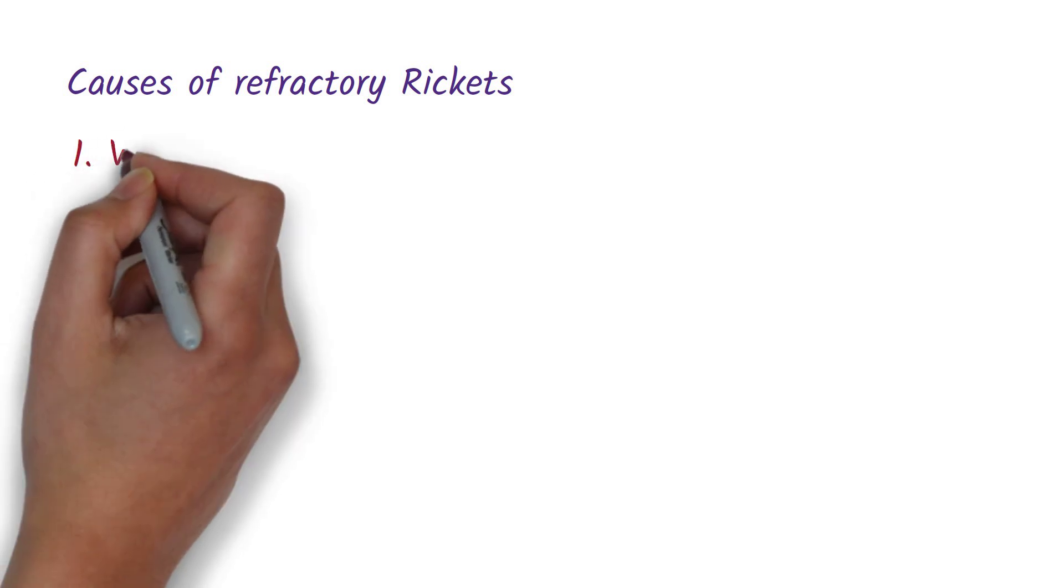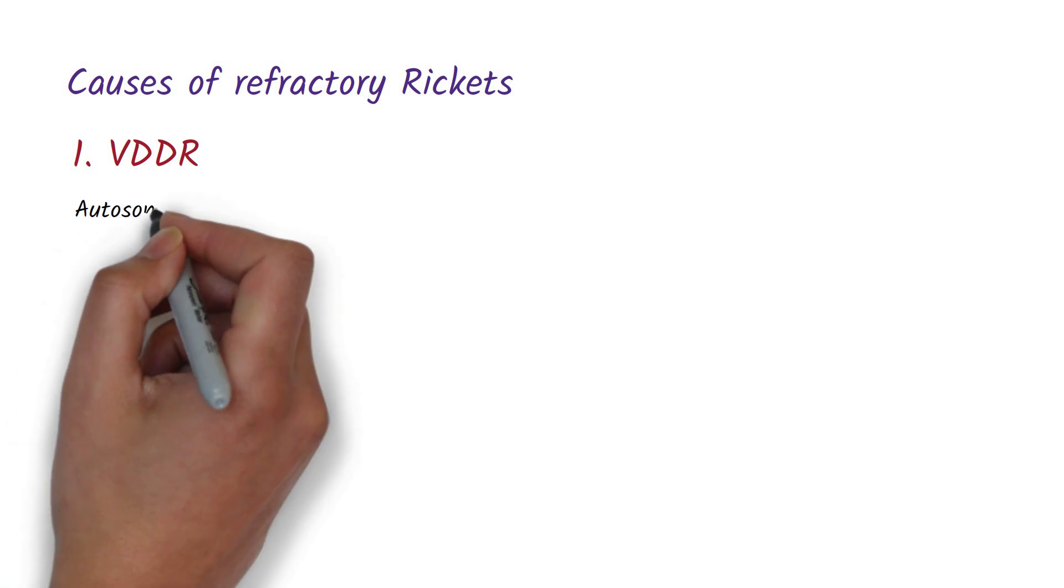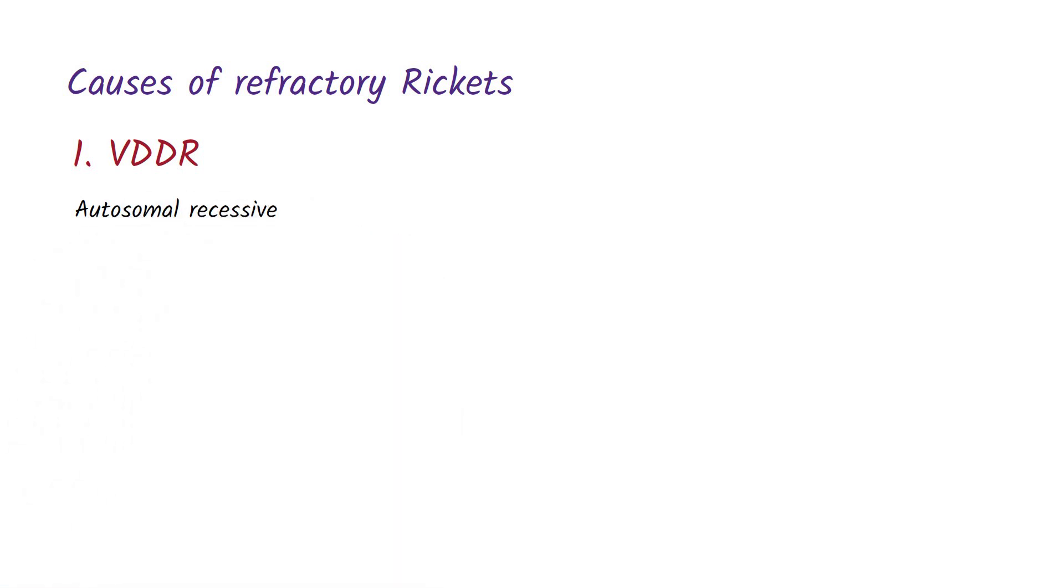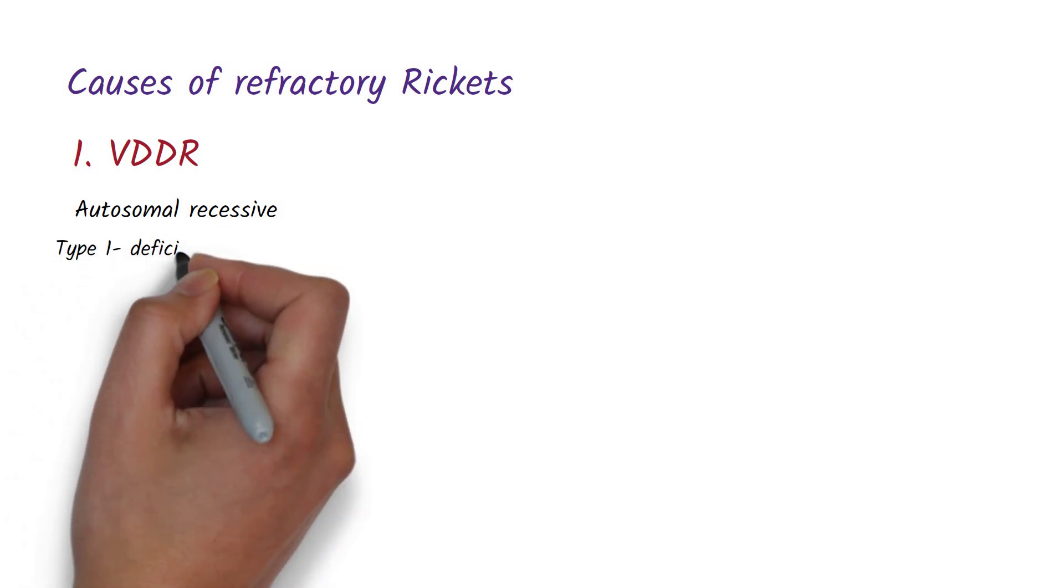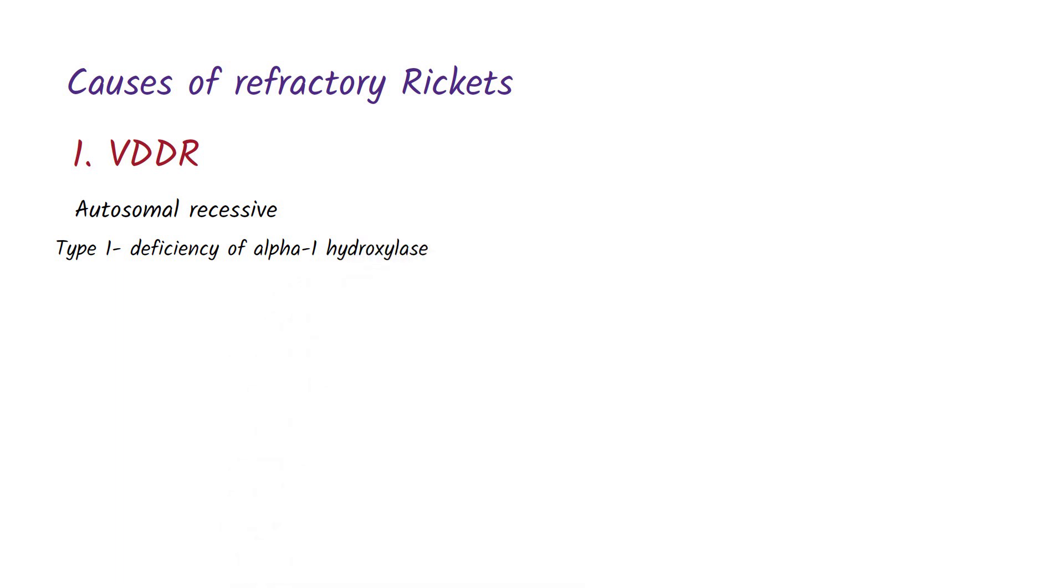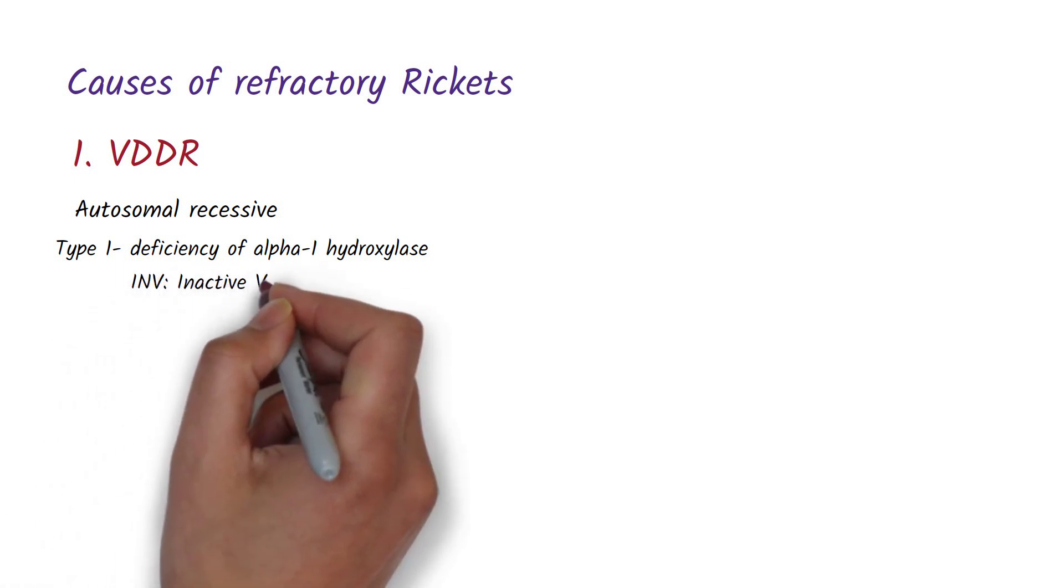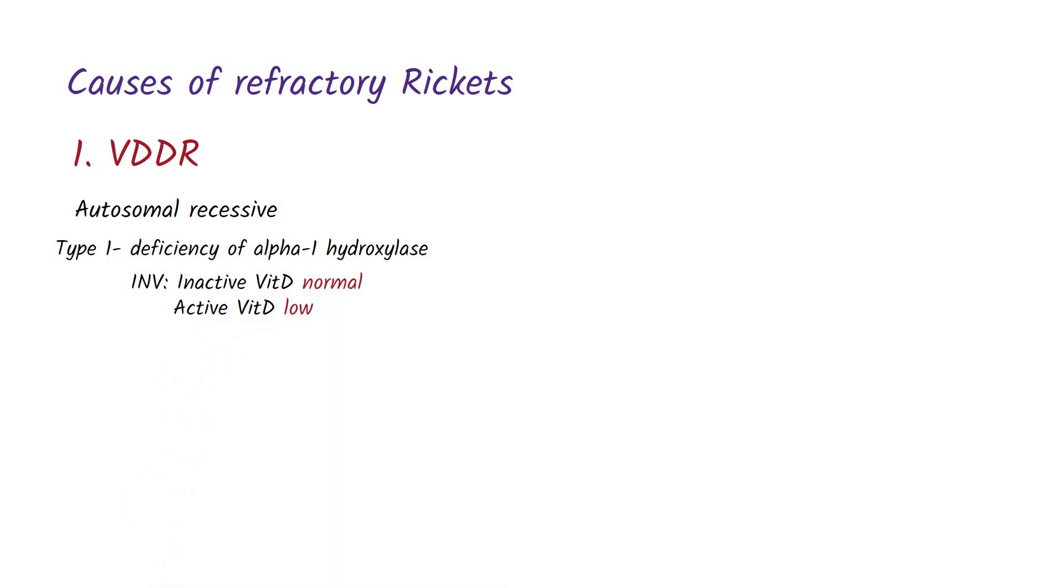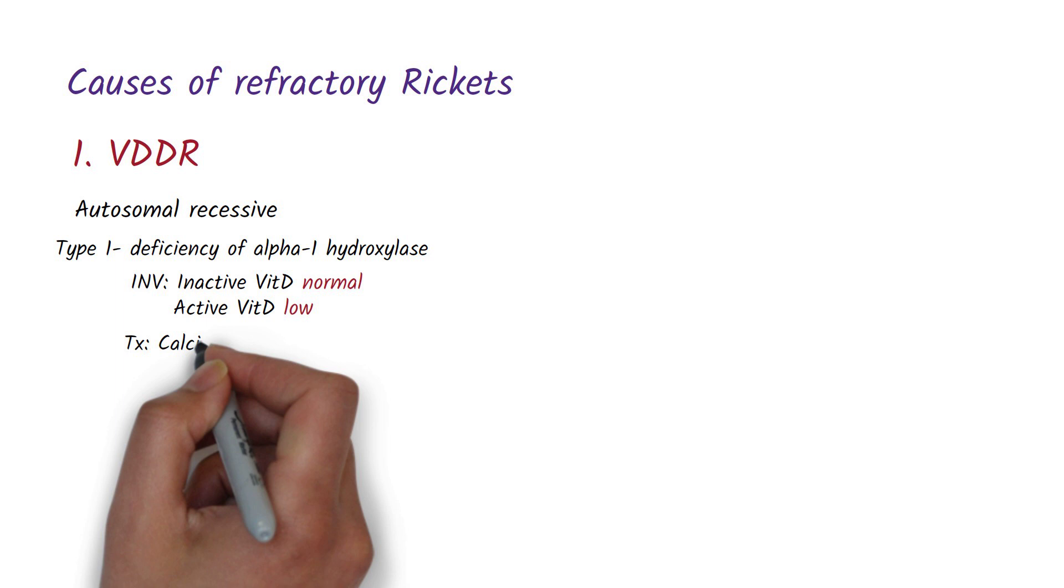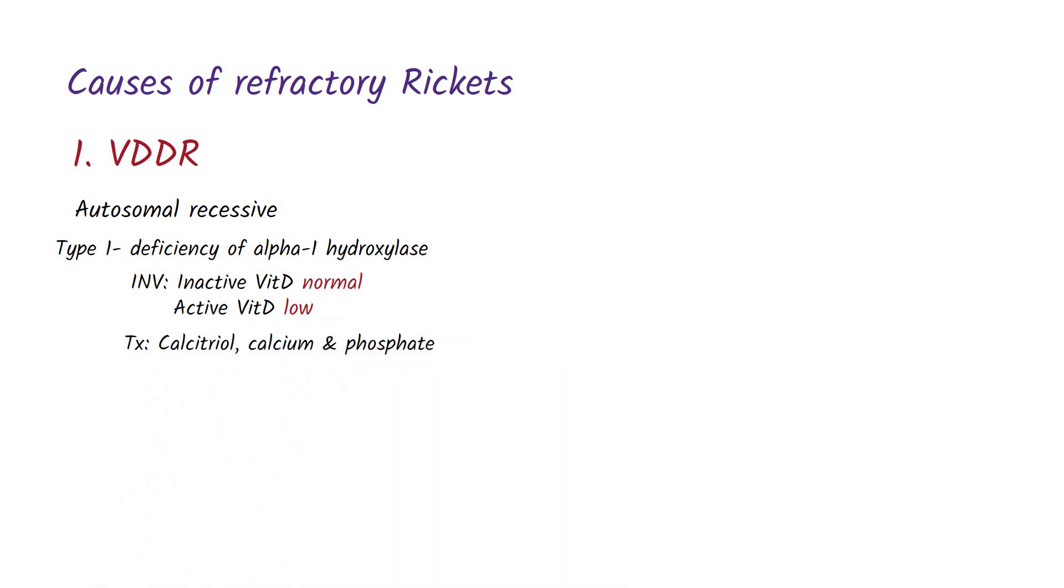Let's start with vitamin D dependent rickets. Vitamin D dependent rickets is an autosomal recessive condition and it can be divided into type 1 and type 2. Type 1 is due to a deficiency of alpha-1 hydroxylase that converts the inactive form of vitamin D to its active form. So in the investigations there will be normal levels of the inactive form of vitamin D but there will be lower levels of the active form. The treatment of type 1 vitamin D dependent rickets is with calcitriol, calcium, and phosphate if needed.